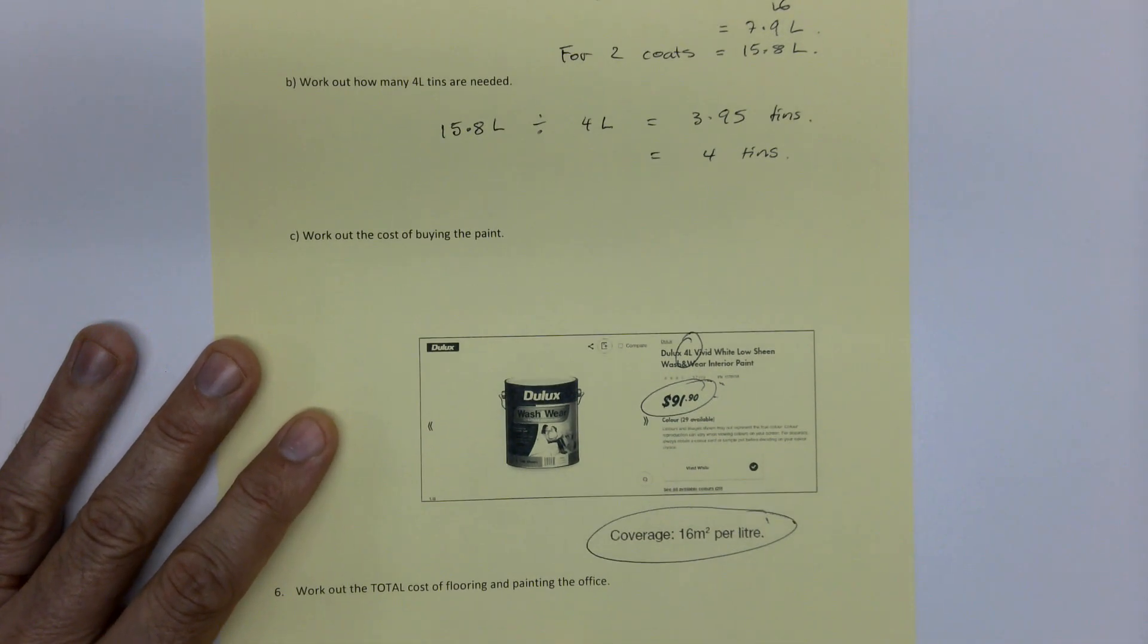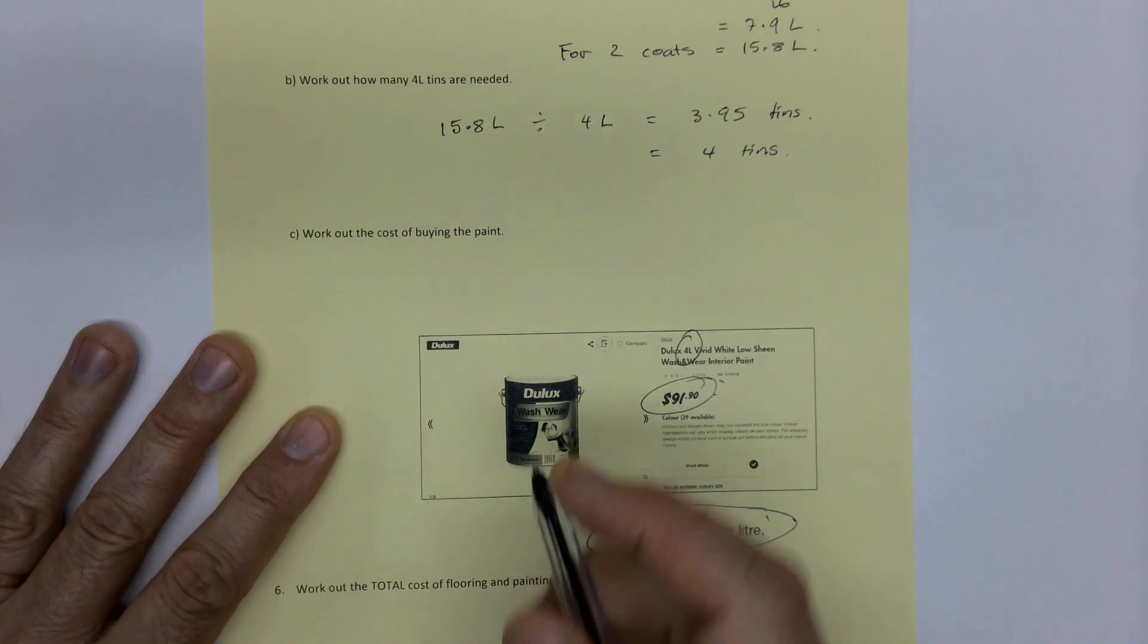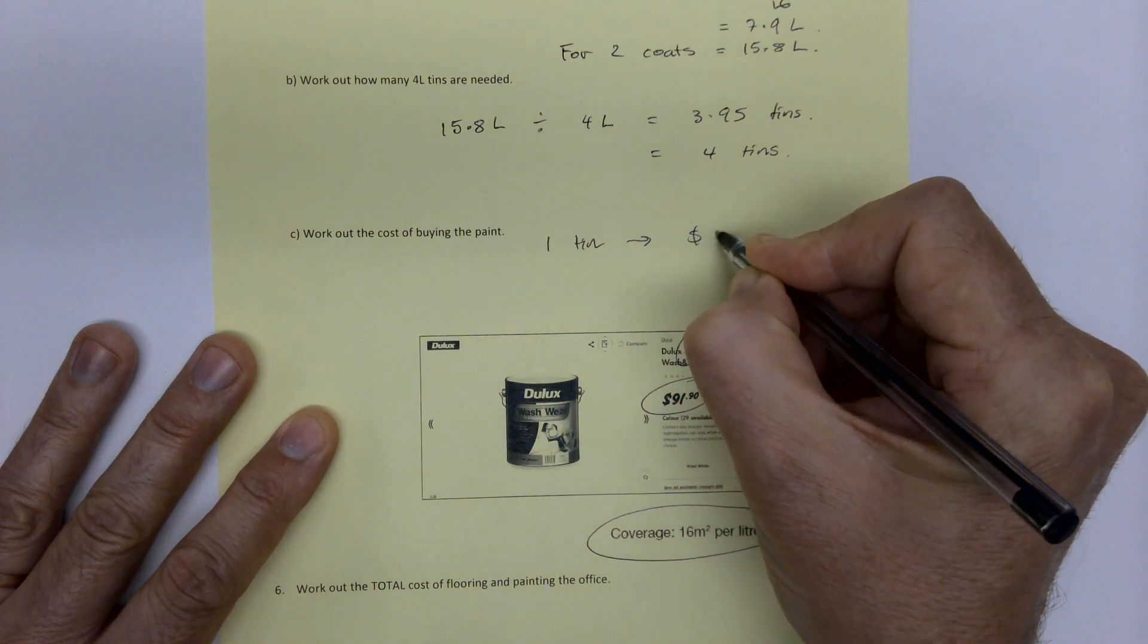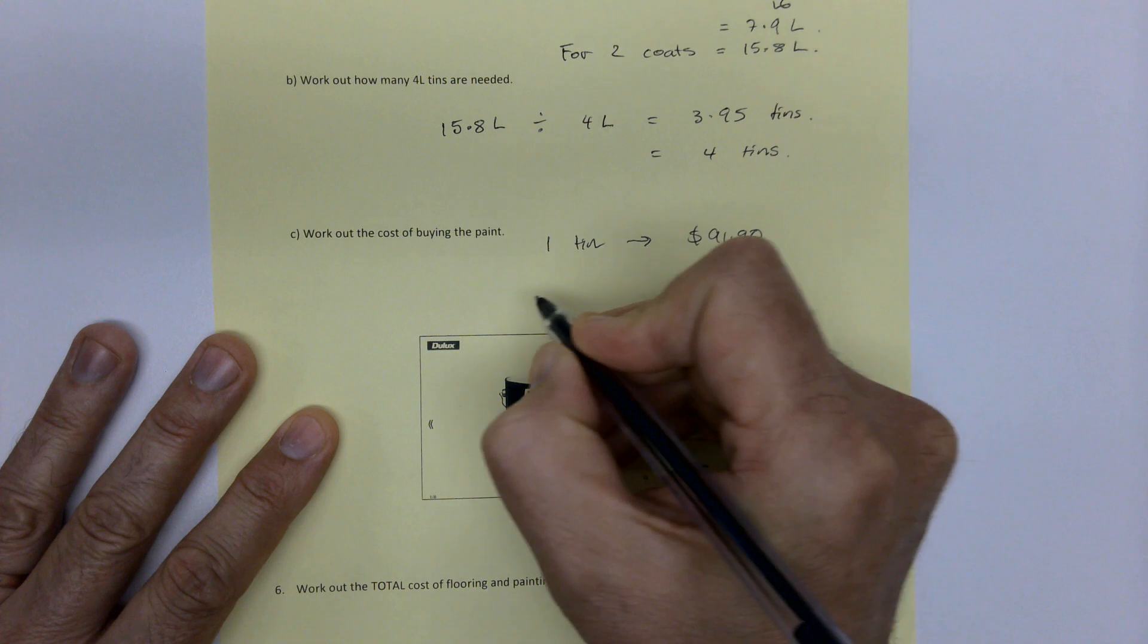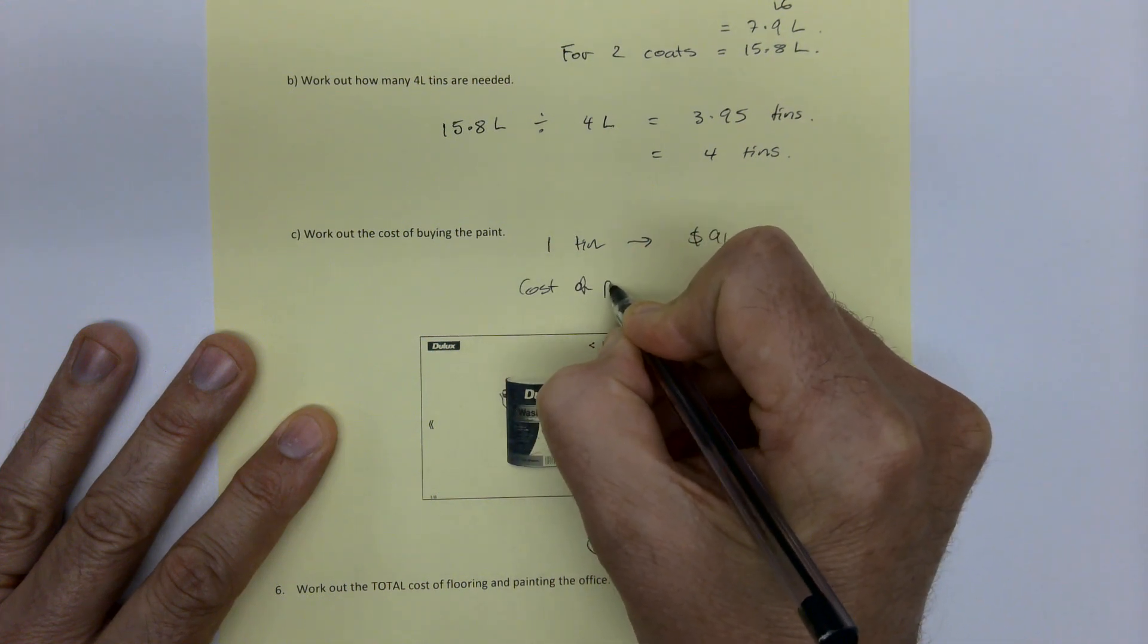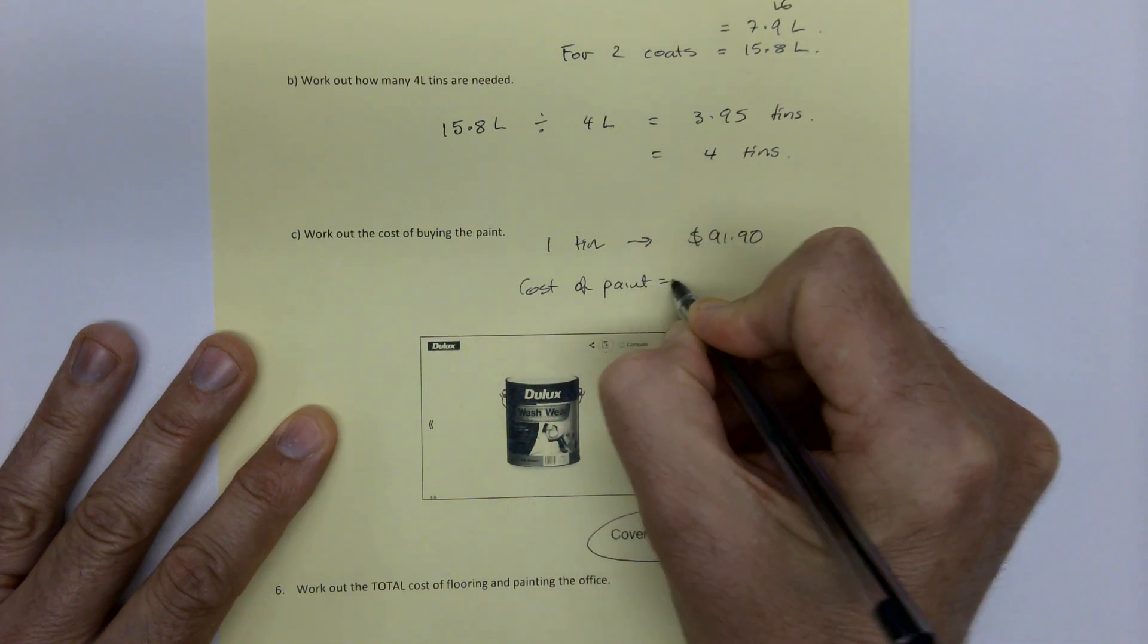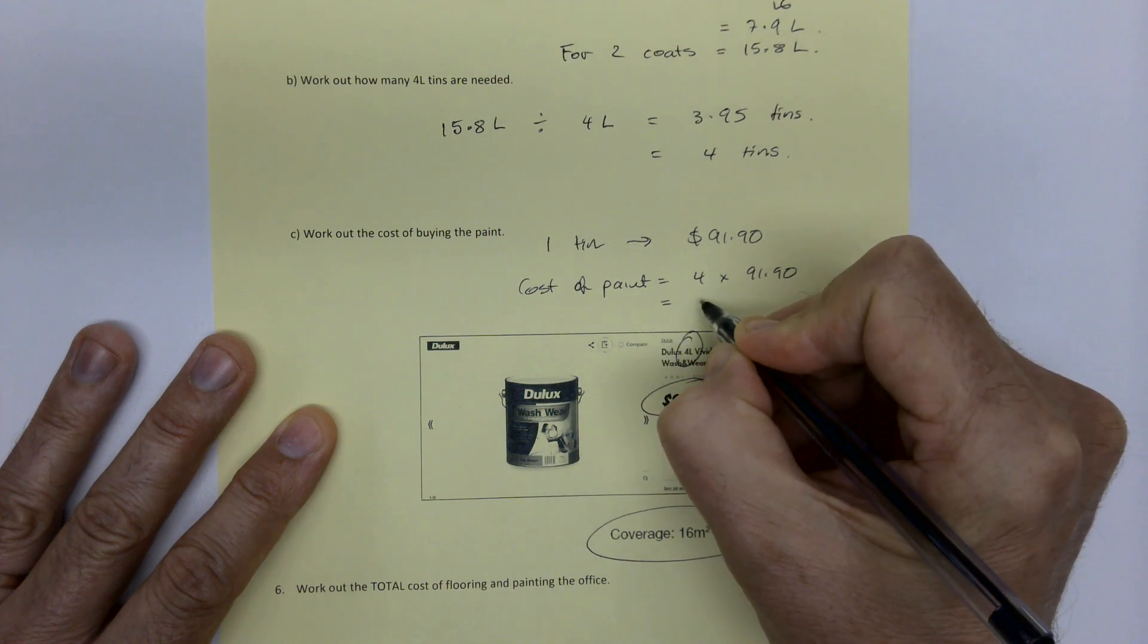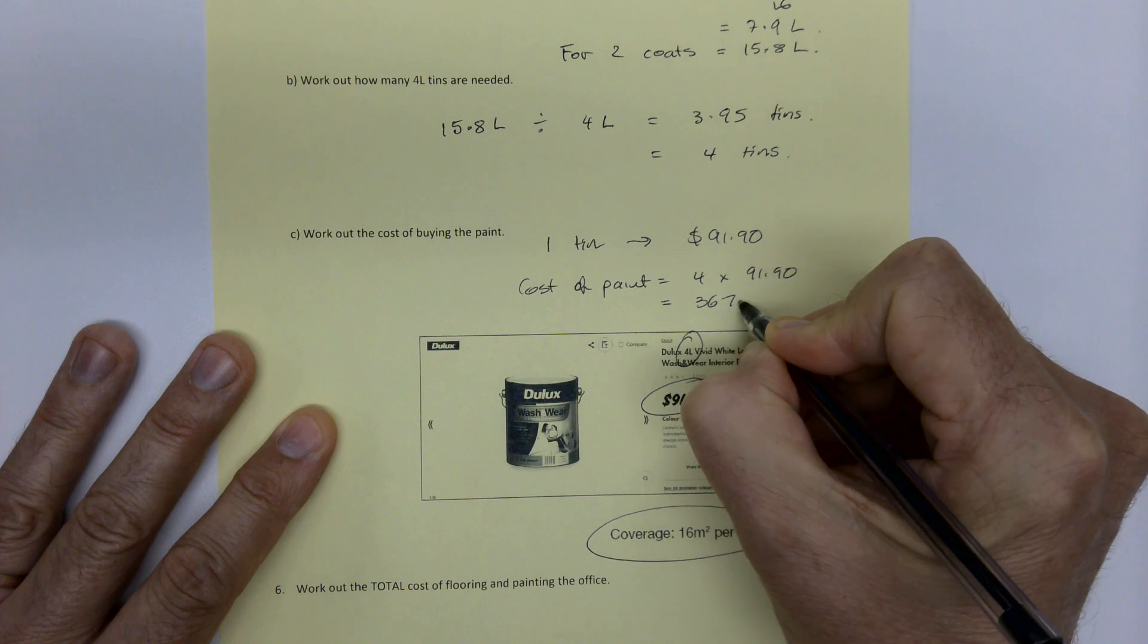How much is that going to cost? So one tin is $91.90. So the cost of the paint is four times $91.90, which is $367.60.